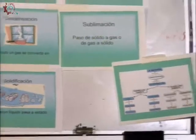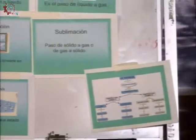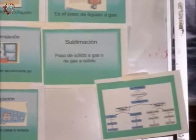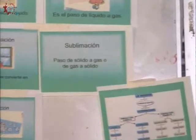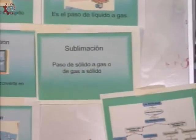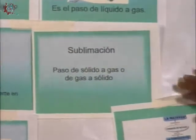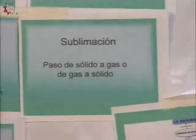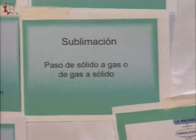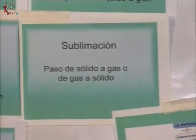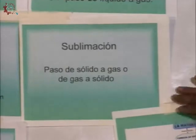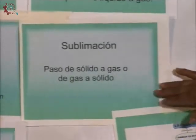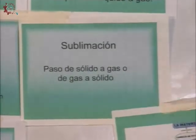Sublimación es el cambio de estado de sólido a gas, y viceversa, de gas a sólido. Lo podemos ver en el hielo seco que cambia de sólido a gas. También lo vemos en laboratorio con los cristales de yodo: le proporcionamos calor y de sólido, de los cristales, se convierte a gas.